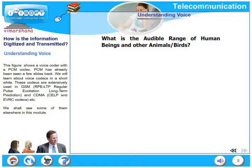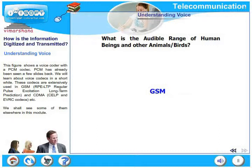This shows a voice coder with a PCM codec. PCM has already been covered in detail in previous slides. These codecs are extensively used in GSM — known as Regular Pulse Excitation Long Term Prediction (RPE-LTP) — and in CDMA, the CELP and EVRC codecs. We shall see some of them elsewhere in this module.